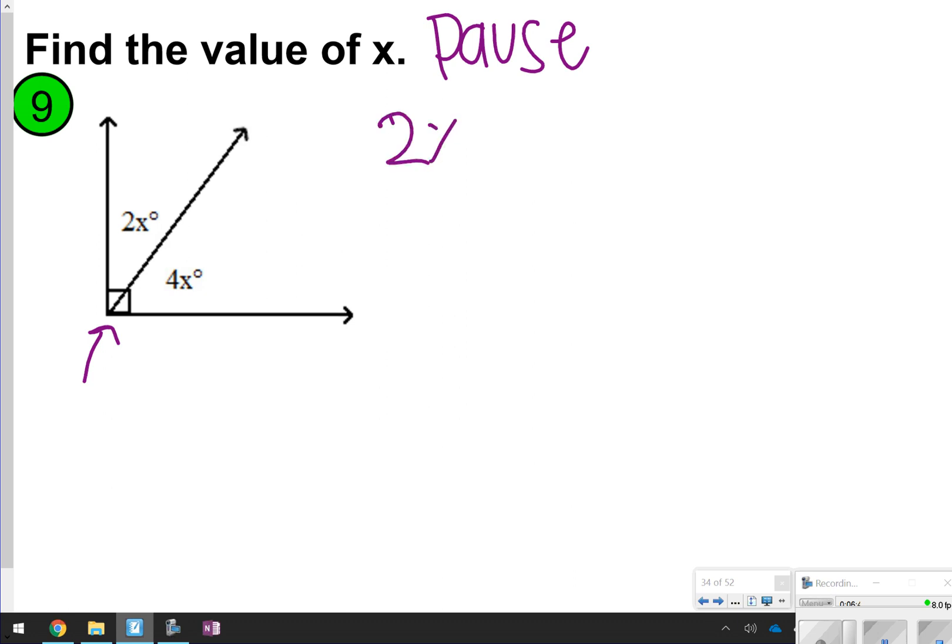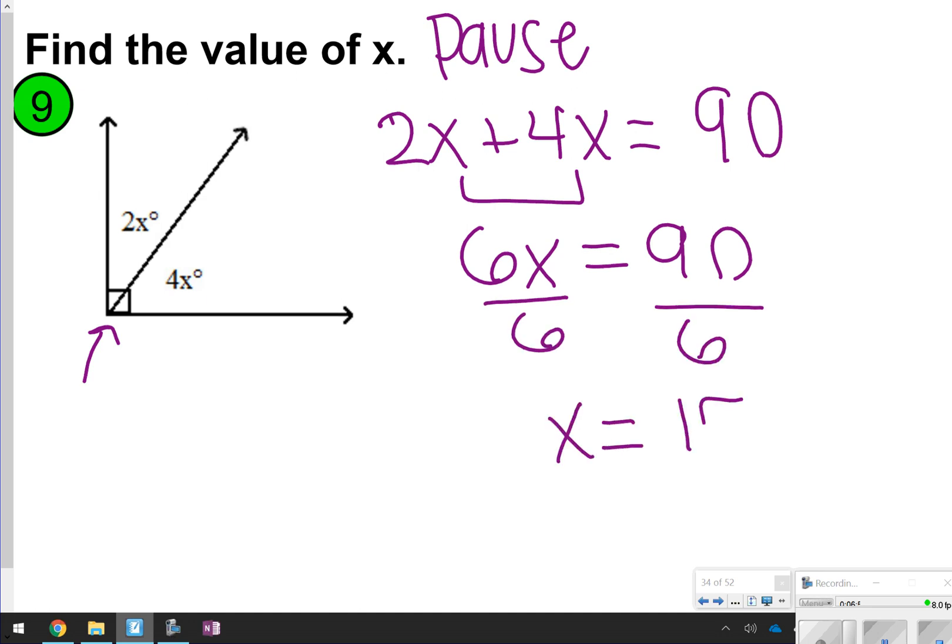All right, so one more time. This one will be 2x plus 4x, and then this one is equal to 90 degrees. We're going to combine our like terms to get 6x equals 90 degrees. And then when we divide both sides by 6, x will be equal to 15. How'd you do?